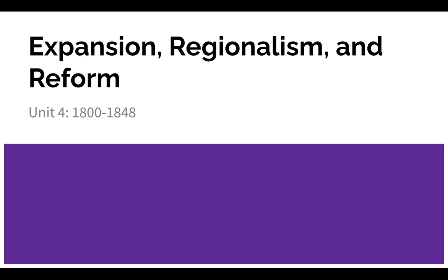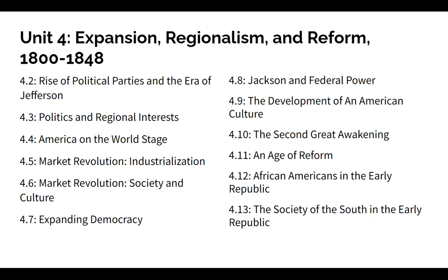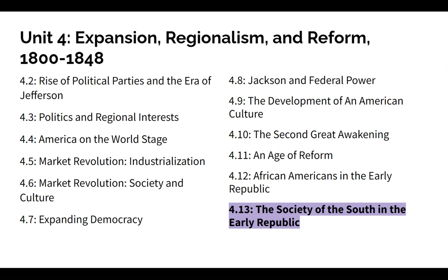Welcome to video number 10, our final video for Unit 4: Expansion, Regionalism, and Reform from 1800 to 1848. In this video, we're going to be focusing on the society of the South in the early Republic. In the last one, we talked a lot about African Americans and the early Republic, and in this one, we're going to be looking more at white Southern society to understand what direction we'll be heading when we get into Unit 5, which will be about sectional divide and ultimately the Civil War.